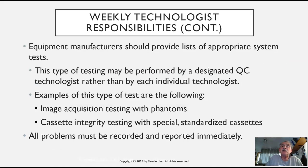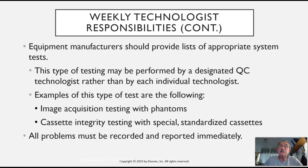Weekly, equipment manufacturers should provide lists of appropriate system tests. In the past this was done by the designated quality control technologist, but now this falls to the technologists. What are the things that we might do? Image acquisition testing with phantoms — taking X-ray images with phantoms to determine cassette integrity. We also want to check exposure factors from automatic exposure control and whether that readout is what we'd expect or wildly different. All problems must be recorded and reported immediately.